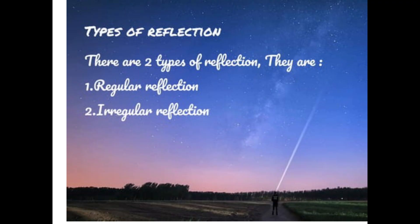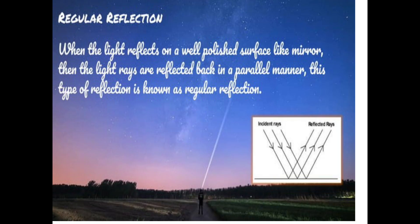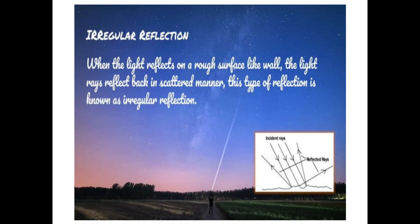Now different types of reflection. There are two types of reflection: regular reflection and irregular reflection. Regular reflection: when the light reflects on a well-polished surface like mirror, the light rays are reflected back in a parallel manner. This type of reflection is known as regular reflection. But when the light reflects on a rough surface like a wall, the light rays reflect back in scattered manner. This type of reflection is known as irregular reflection.